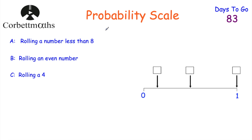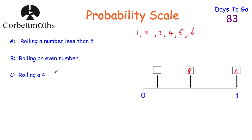Rolling a number less than eight — on a dice we've got the numbers one to six, and all of them are less than eight. So that would have to happen; it's certain. So A goes at the certain end. B, rolling an even number: half of them are even and half are odd — one, three, five are odd and two, four, six are even — so the probability is a half, an even chance. B goes in the middle. Finally C, rolling a four: only one of the six numbers is a four, so it could happen but it's unlikely. So the answer is C, B, A on the probability scale.